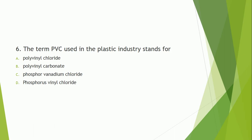Question number 6: The term PVC used in the plastic industry stands for what? PVC pipes are commonly used — the full form of PVC is polyvinyl chloride. The correct answer is option A.